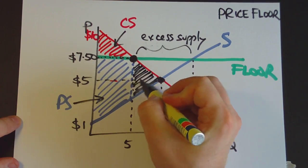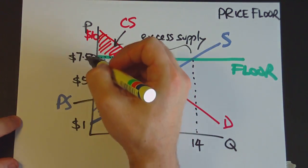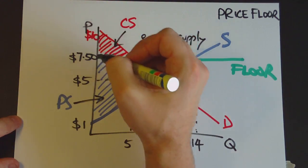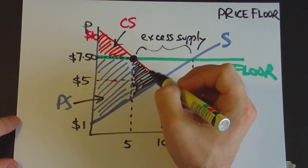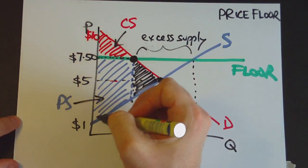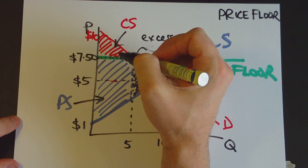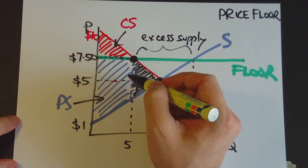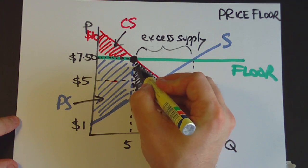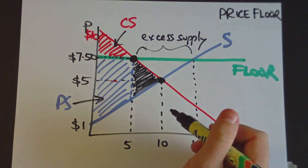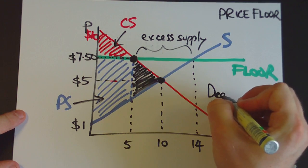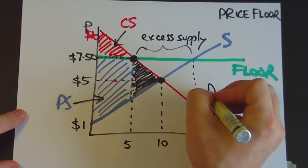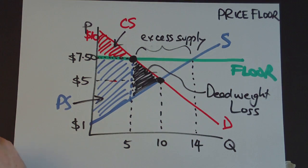So this is the idea that introducing this price floor here, it actually benefits producers potentially in terms of increasing their surplus here. But consumers are definitely worse off, and society as a whole is worse off, because even though producer surplus has increased, consumer surplus has decreased more than the suppliers have actually benefited from the price floor. And so this whole area of surplus here has evaporated, it's gone, and no one gets it. And that's called a deadweight loss, that area here. And it's a price floor.